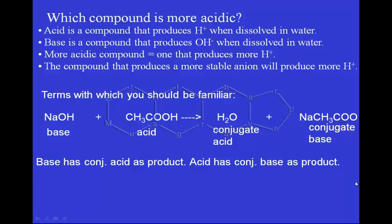The most important thing is that the compound that produces the more stable anion will produce more H+. The acidity of a compound depends upon the stability of the anion that it forms.